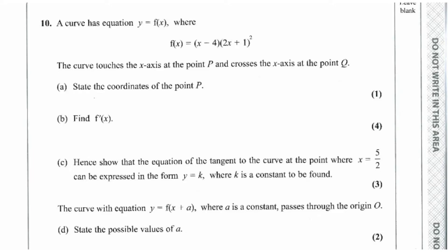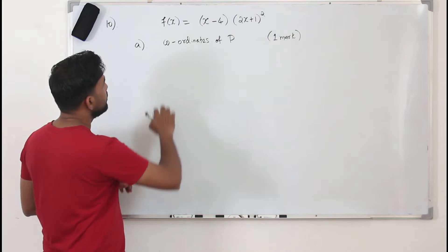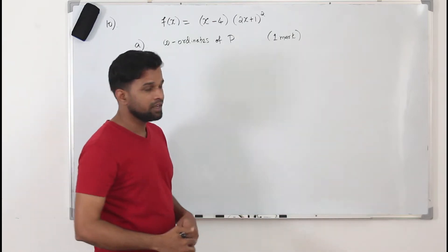Question number 10. A curve has equation y equals f of x, where f of x is given. The curve touches the x-axis at the point P and crosses the x-axis at the point Q. For part A, they want you to find the coordinates of P.